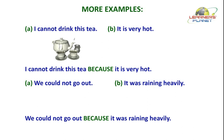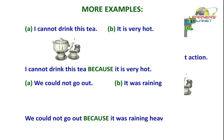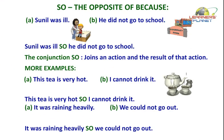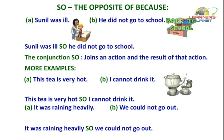Let us look at some more examples. You have learnt and understood that BECAUSE tells us the reason for any action. Let us now look at a conjunction that acts like the opposite of BECAUSE. This conjunction is SO.